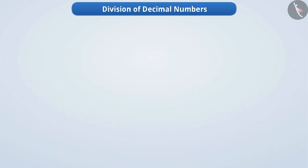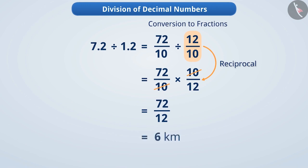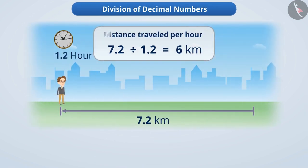One way to obtain the quotient is to write the decimal numbers to be divided as fractions. 7.2 can be written as 72 by 10 and 1.2 can be written as 12 by 10. 72 by 10 divided by 12 by 10. Can you tell us how we will divide this fraction? Think a little. Absolutely correct. We will keep the first number exactly the same and multiply it by the second number's reciprocal. 72 by 10 into 10 by 12. Now, 10 in the numerator and 10 in the denominator can be cancelled by division. And we will get 72 by 12 results in 6. Therefore, the person covers a distance of 6 km per hour.